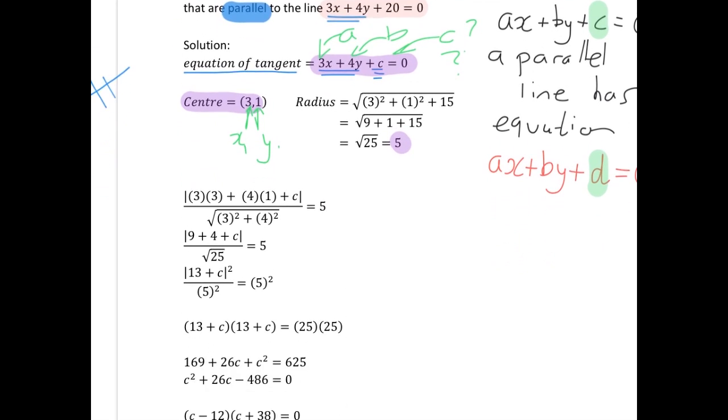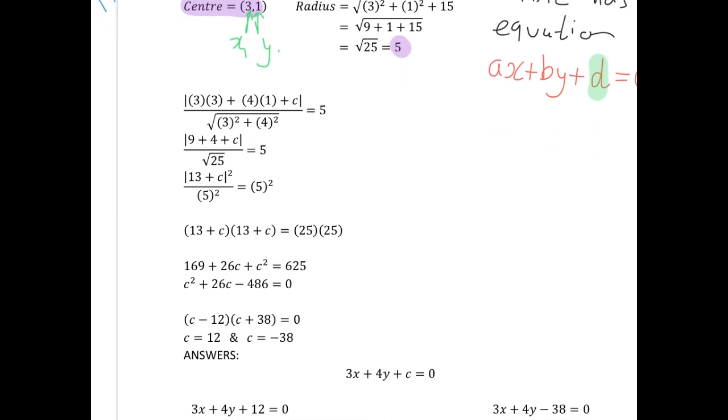Working that down through, we're going to end up having something on the top that we're going to have to square. We have the square root of 25 on the bottom, so that's just 5. But in order to get rid of this modulus, we have to square everything, so top and bottom and the other side of the equals.